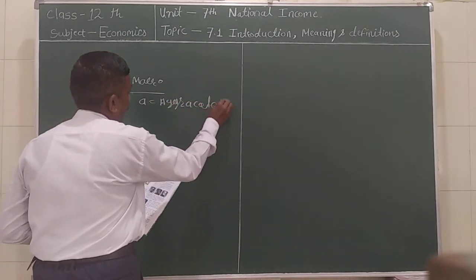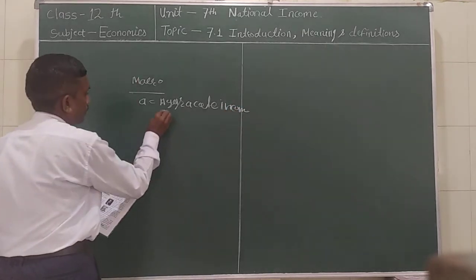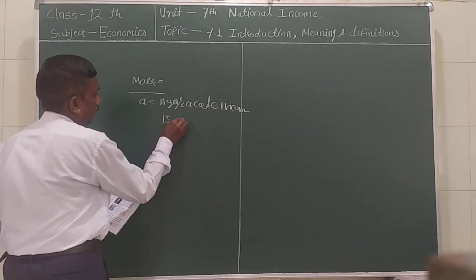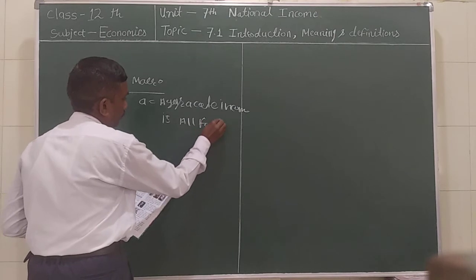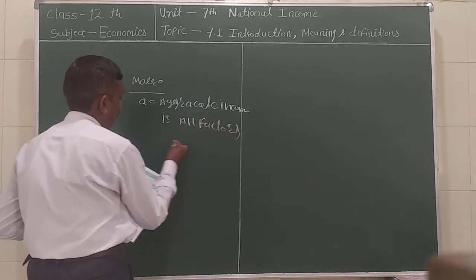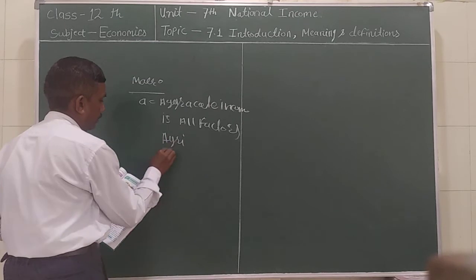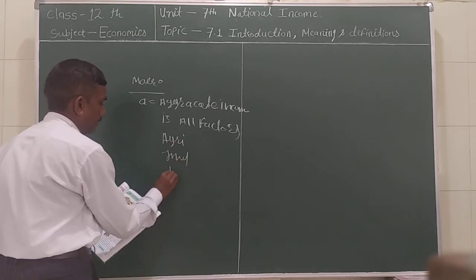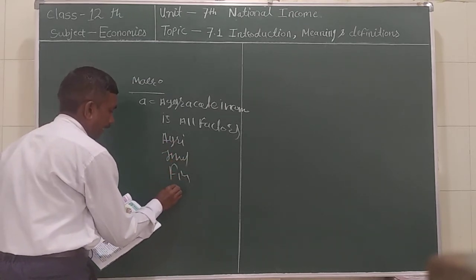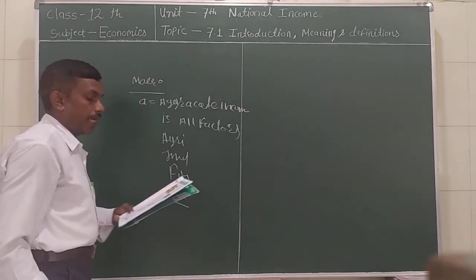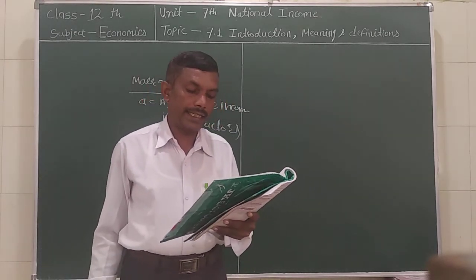The aggregate income is an all-vector. For example, agriculture field, industrialization, finance, and other activities of the income sources in the aggregate of national income.